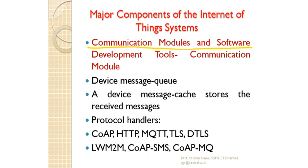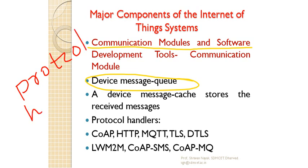What is this communication model? Here we can see there is one thing called device message queue. Basically, this communication module consists of protocol handlers - I have already told you what exactly the meaning of protocol is. It consists of protocol handlers, message queue, and message cache.